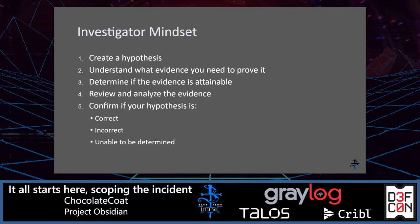Step number one: creating a hypothesis. Moving on past that is really understanding what evidence you're going to need to prove it. You can have any hypothesis in the world, but if you want to prove anything in IR, you need the evidence to back it up. You also need to understand what type of evidence is going to prove that RDP took place, or that a phishing email is malicious — how do you prove something is actually malicious versus just stating it as your opinion?